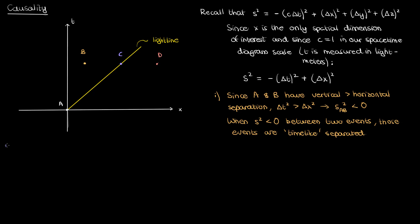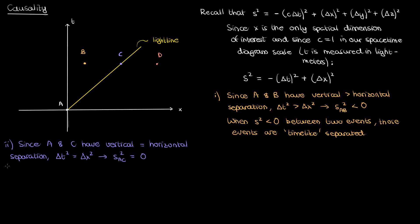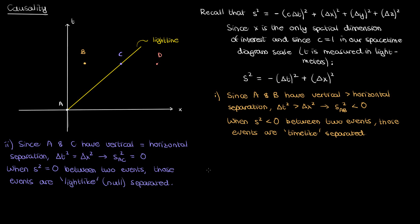For events A and C: the vertical (time) separation equals the horizontal (distance) separation, so delta t squared equals delta x squared, meaning the spacetime interval between A and C is zero. When the spacetime interval is zero, those events are said to be light-like separated because the line between them on the spacetime diagram is parallel to the light line. Another name for this is null separated, since the spacetime interval is zero (null). So A and C are light-like or null separated events.